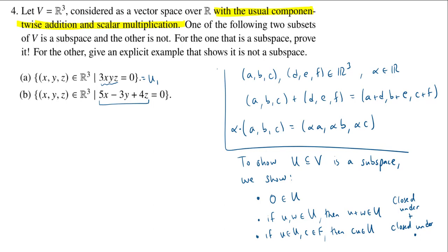We got to test. So first, is zero in U₁? Well, what is the zero element of V? The zero element in V is (0,0,0). Because if I add (a,b,c) to (0,0,0), I will get (a,b,c). So this is my additive identity. Is this in U₁? Well, three times zero times zero times zero is definitely equal to zero. And hence, this zero element is in U₁.